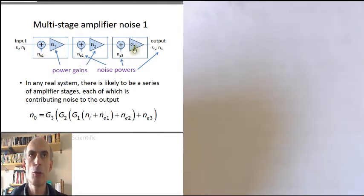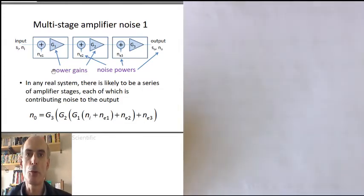And we're using powers because it's much easier to add up the different contributions of noise if they are represented in powers. We can just add up noise powers directly. We don't have to take the squares, add up the squares and then take the square roots, which we'd have to do if they were noise voltages.